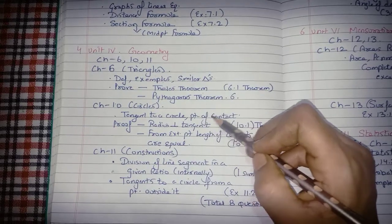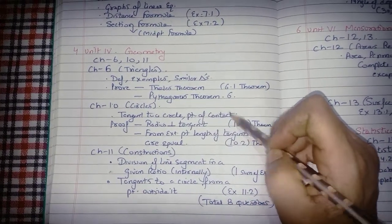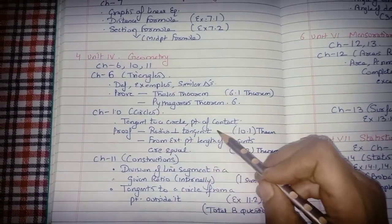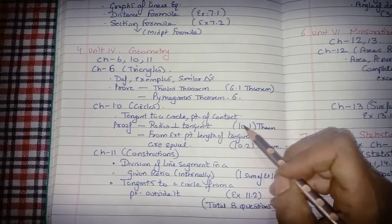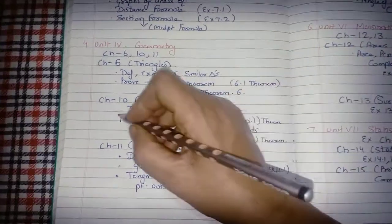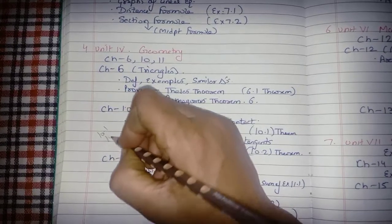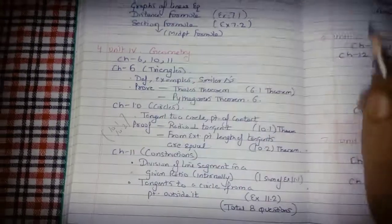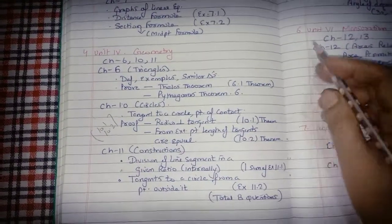For Chapter 10, Circles: prepare tangent to a circle at point of contact. There are two theorems and both proofs must be prepared. Do both exercises 10.1 and 10.2 completely.